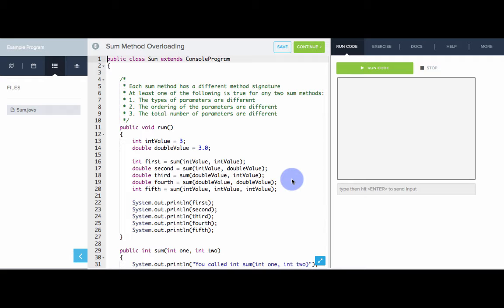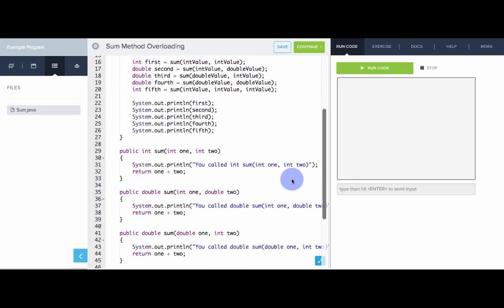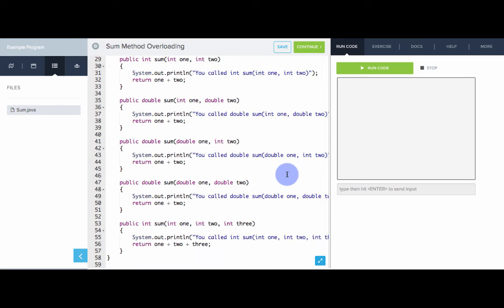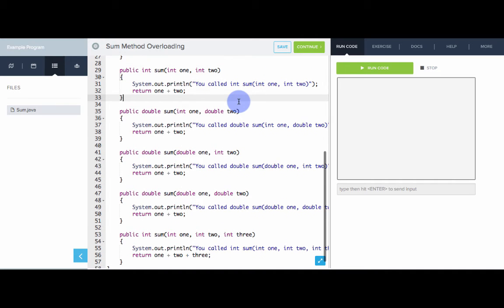So, here we have a program that performs sums on various integer and double values. As you can see, we have several different sum methods. They all have the same name, but they each have a different method signature. This one takes two ints, this one int double, double int, double double, and then three ints. Each of these methods, when called, will print out a message indicating that you are inside that particular method.